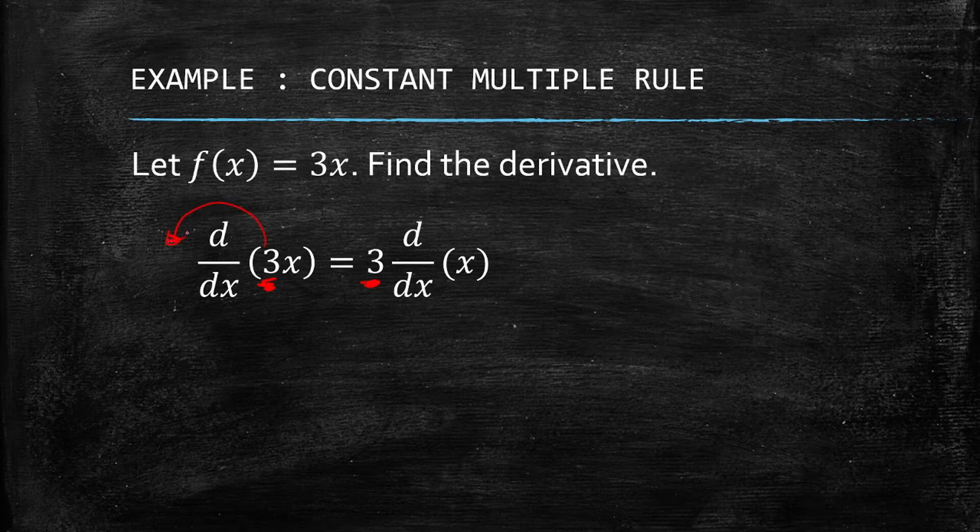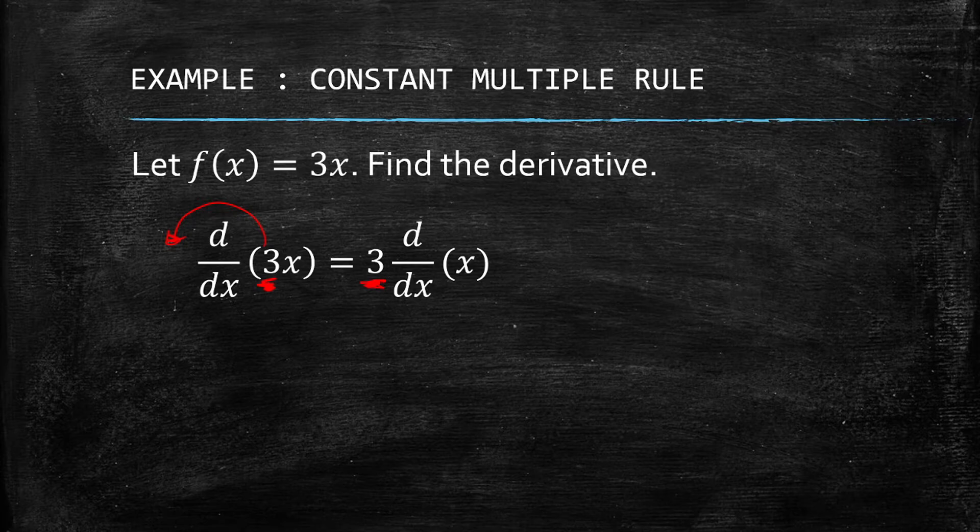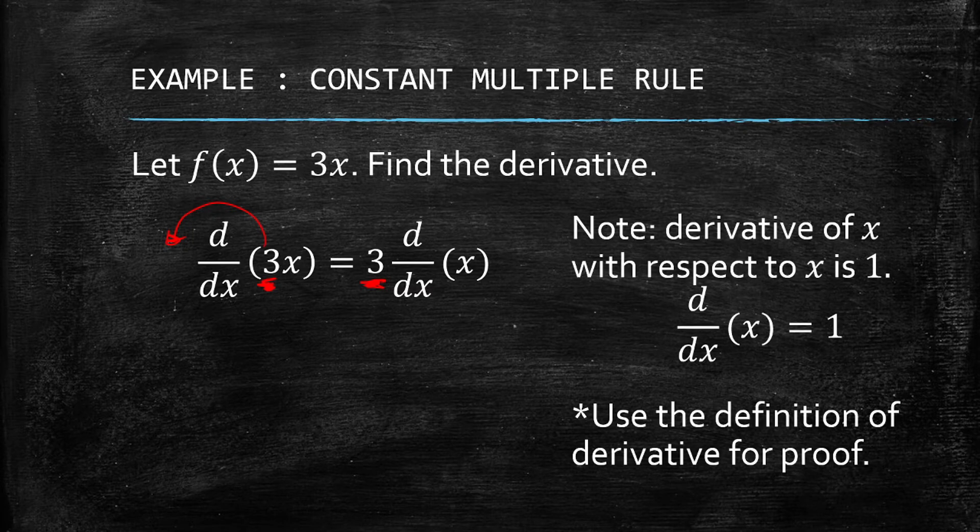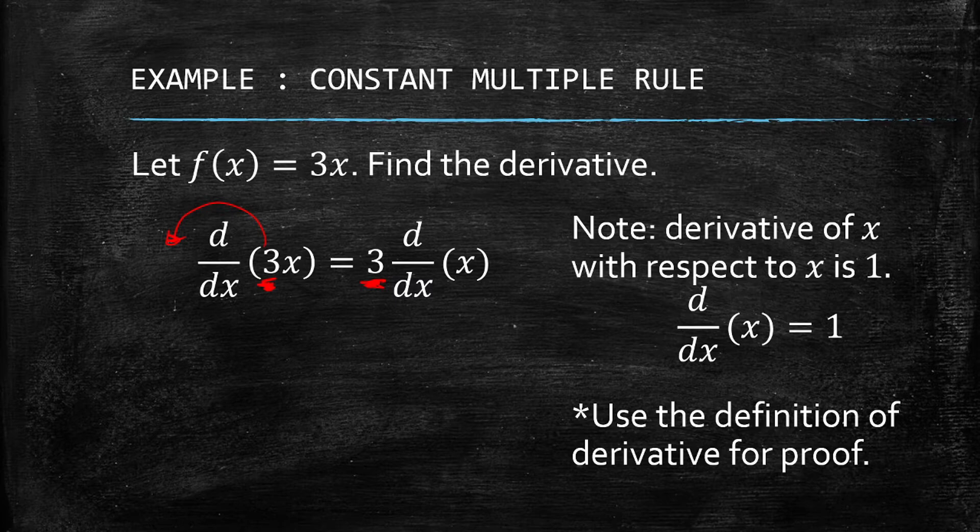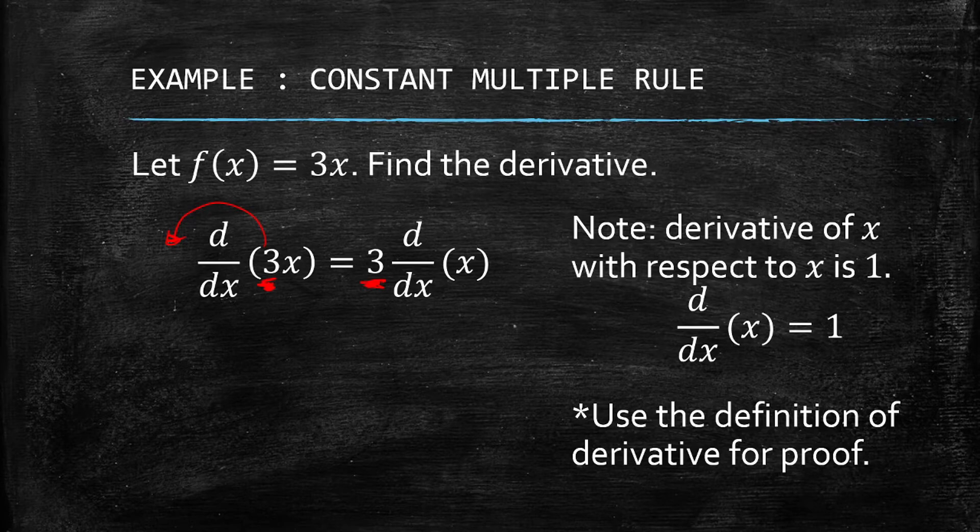We simply put it outside, so we have now the derivative of x in terms of x. Take note that the derivative of x with respect to x is just 1. If you use the limit definition of the derivative, it is just 1.